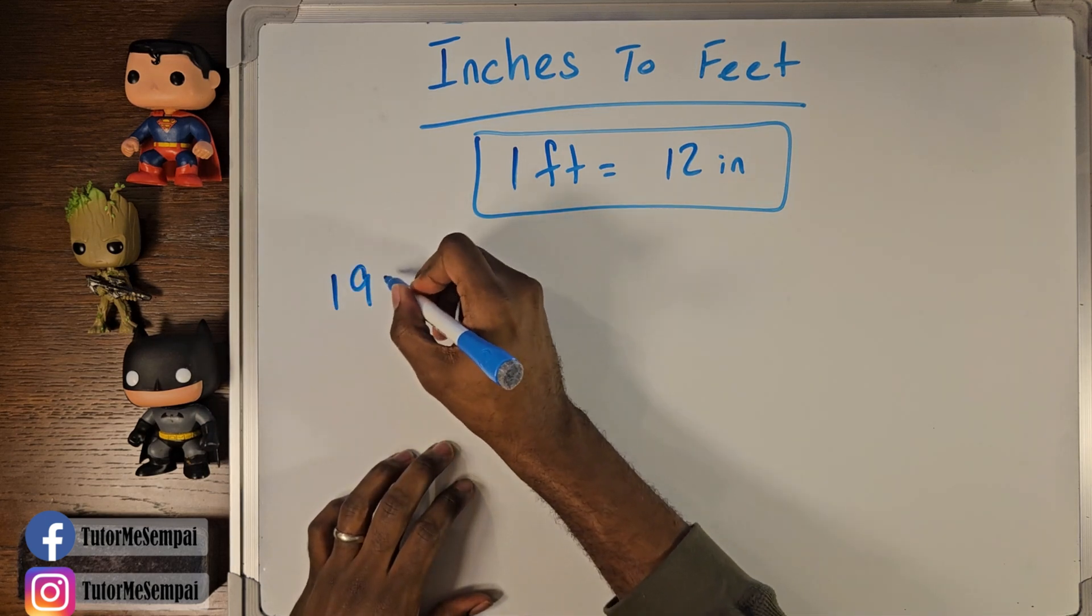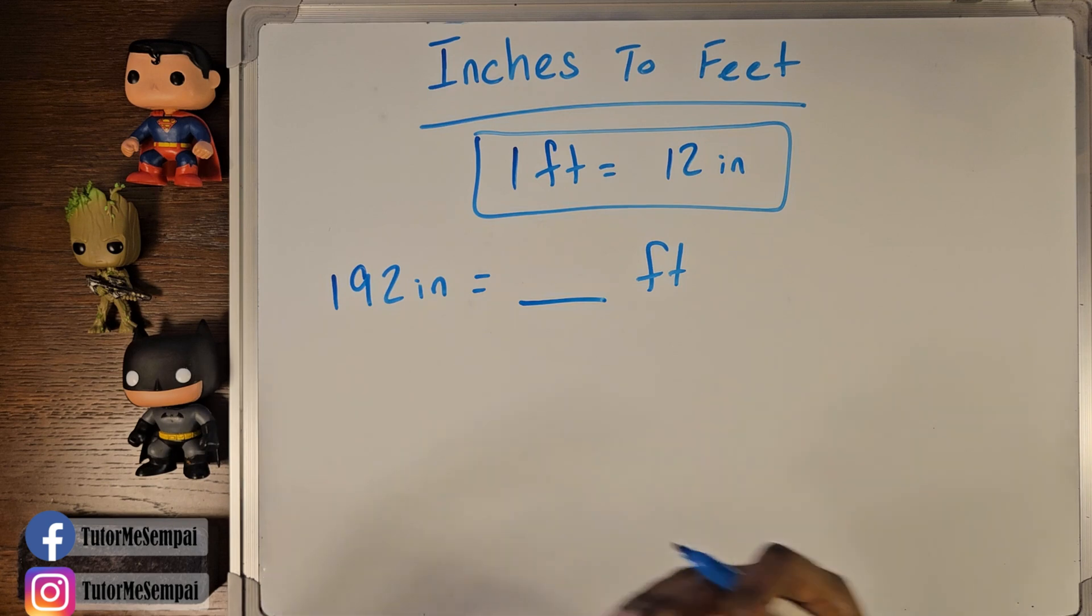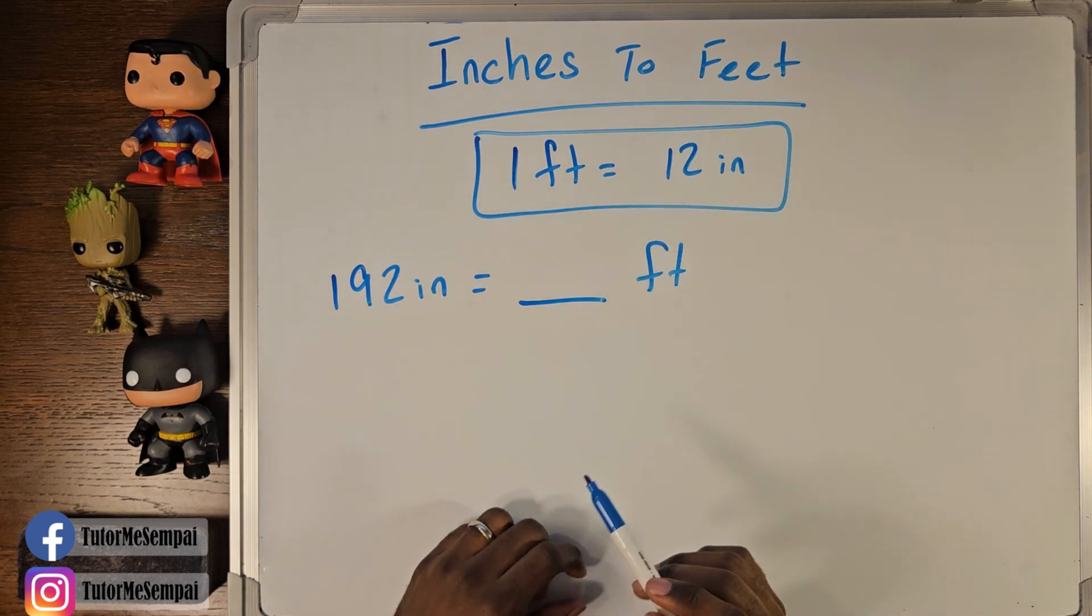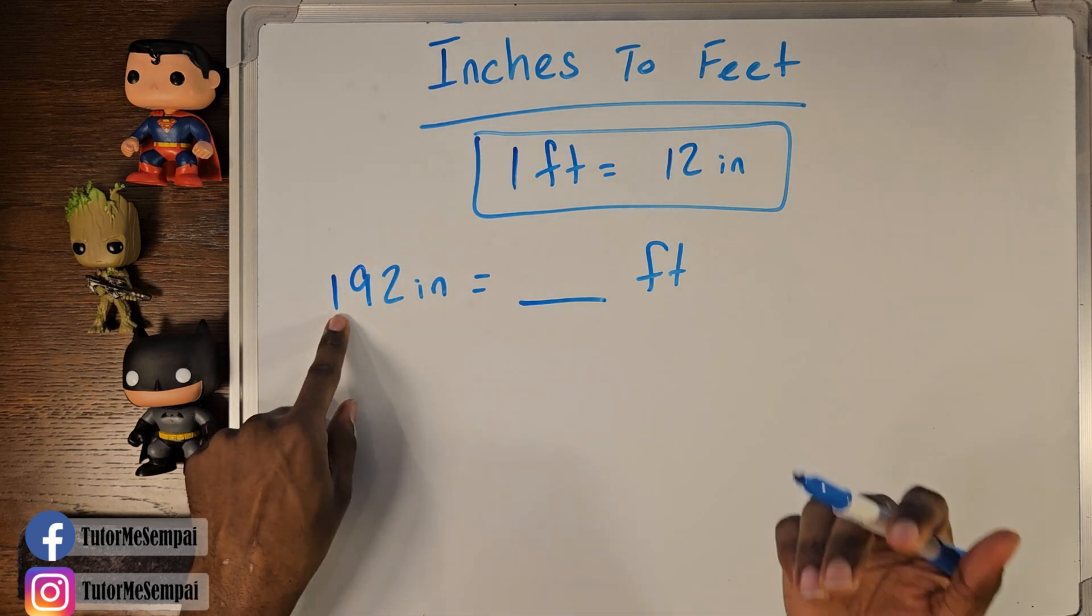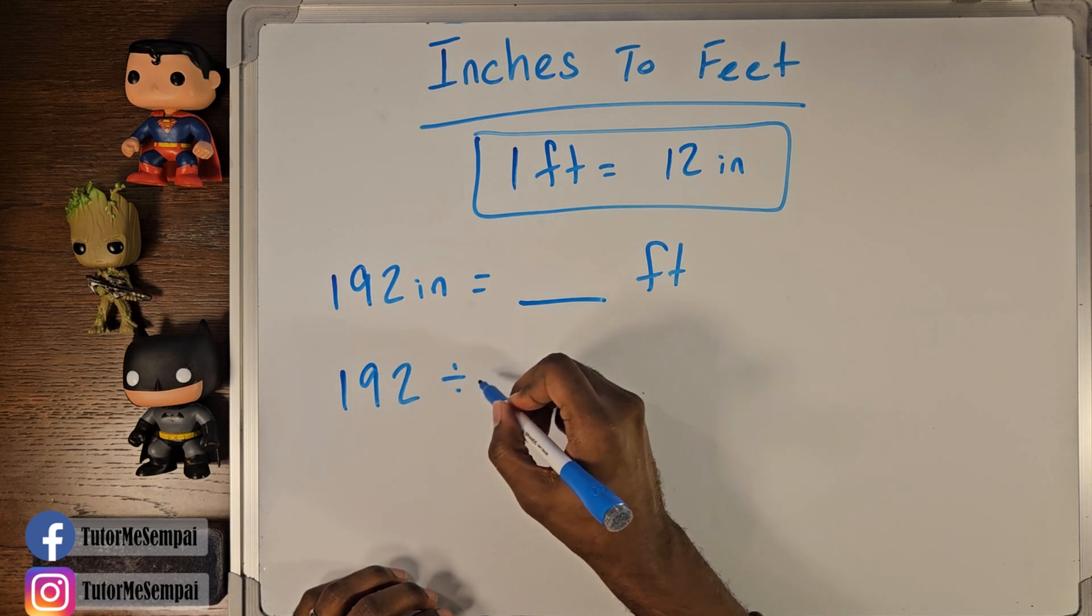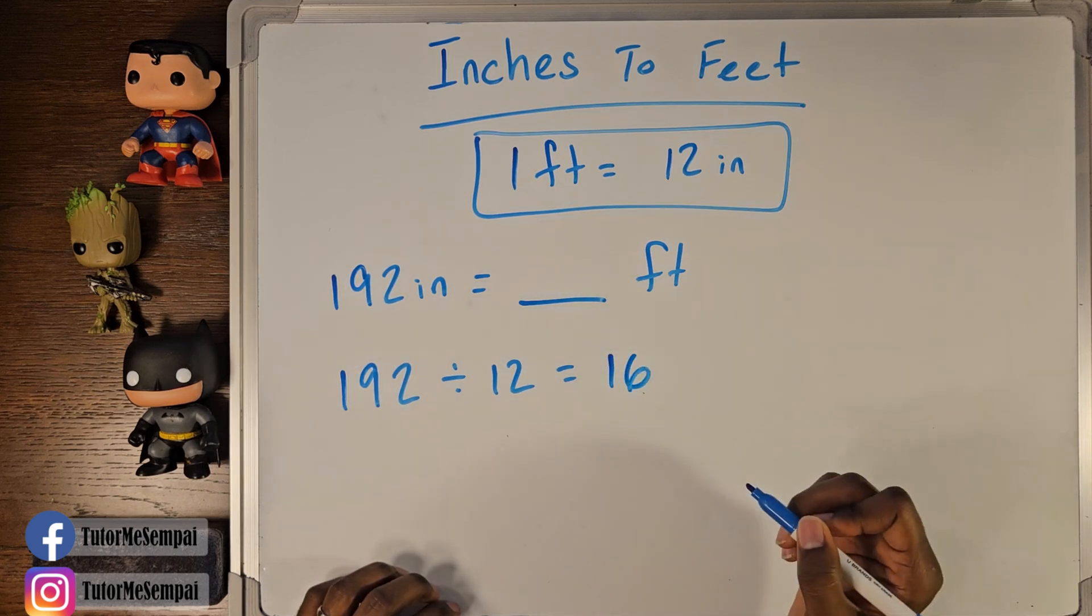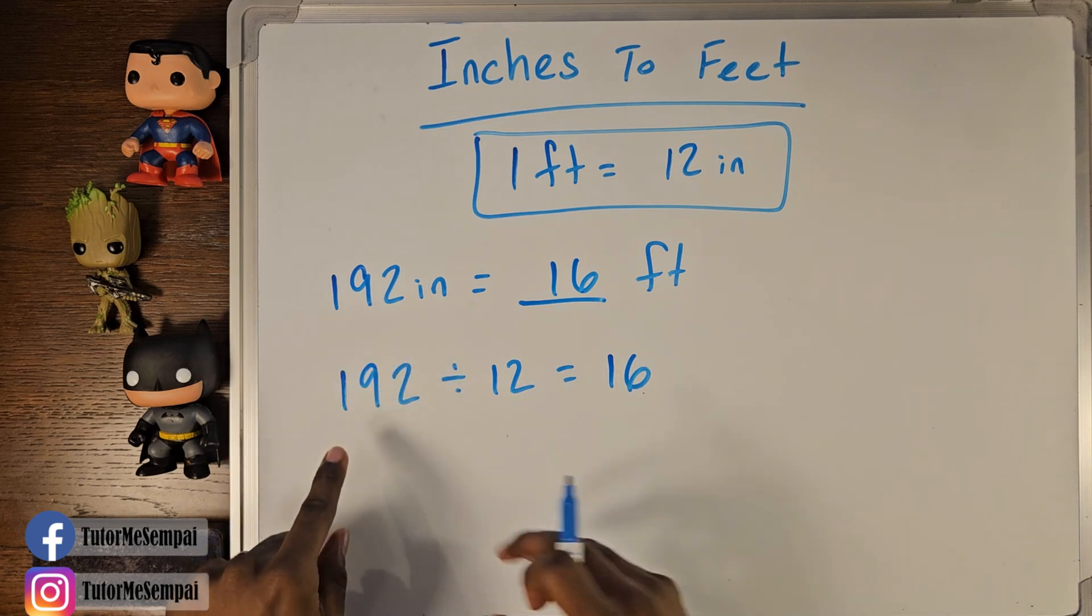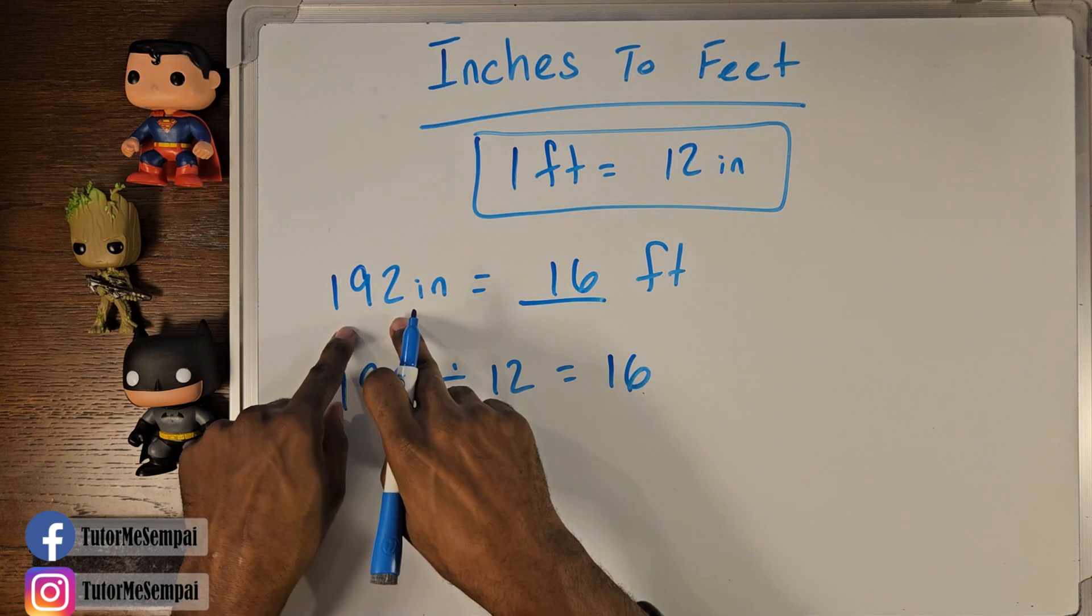So let's say we have 192 inches and we want to know how many feet that's going to be. We're given 192 inches, but we don't know how many feet would this actually equal. Well, we know that every foot has 12 inches in it. So what we want to do here is figure out how many groups of 12 does 192 give us? If we were to break this up into groups of 12, how many groups would you have? And this is really just telling you to divide 192 by 12. If you were to do that, you would see that 192 divided by 12 gives you 16. And 16 is going to be how many feet we have when we have 192 inches. We can break up 192 into 16 groups of 12. Therefore, we have 16 feet whenever we have 192 inches.